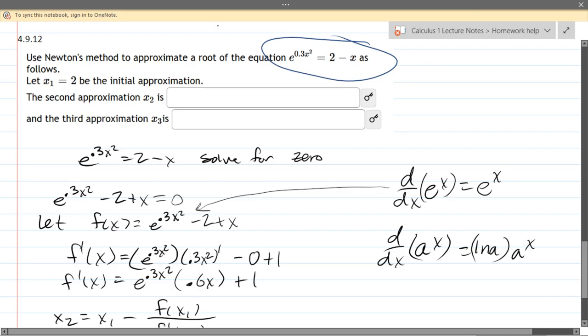Now, first thing we have to do is solve for 0. So what I did, I rewrote the equation first. Then I subtracted this to the left side. So we have this equation here equals 0.